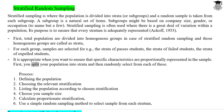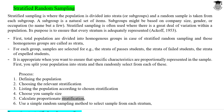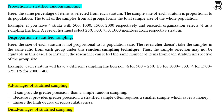You split your population into strata and then randomly select from each. The process involves: defining the population, choosing the relevant stratification, listing the population according to chosen stratification, choosing a sample size, calculating proportionate stratification, and using a simple random sampling method to select a sample from each stratum.